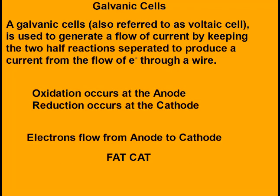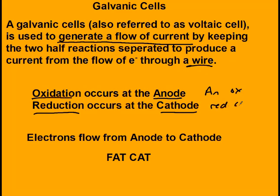In galvanic cells, also referred to as voltaic cells, an electric current is generated by keeping two half reactions separated to produce a current from the flow of electrons through a wire. Oxidation occurs at the anode and reduction occurs at the cathode — remember 'an ox and red cat,' or that the vowels go together (anode/oxidation) and consonants go together (reduction/cathode). Electrons always flow from anode to cathode — 'fat cat: from anode to cathode.'